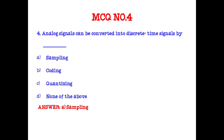Analog signals can be converted into discrete time signals by the process called sampling. Sampling can also be defined as the process of measuring the instantaneous values of a continuous time signal in discrete form. So the answer for this question is sampling.